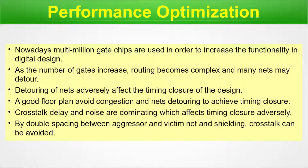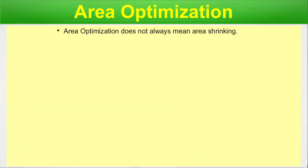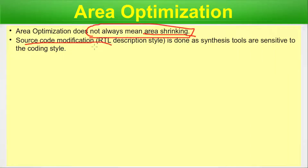Area optimization. Here we will discuss area optimization methodologies in brief, again in a generic manner — company-specific methods are often trade secrets. Importantly, area optimization does not always mean area shrinking; it means achieving an optimum area so that the design is fully functional with good performance, good power (dynamic power, etc.). Area optimization means optimization, not always shrinking.